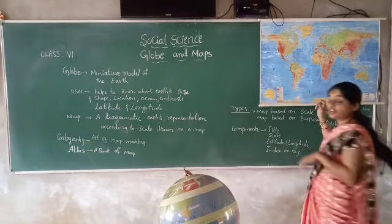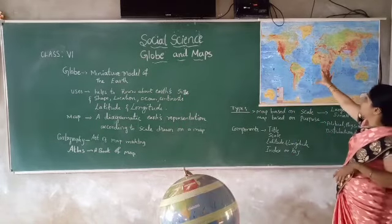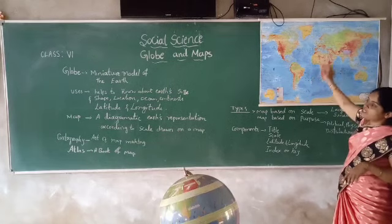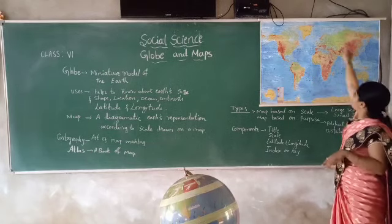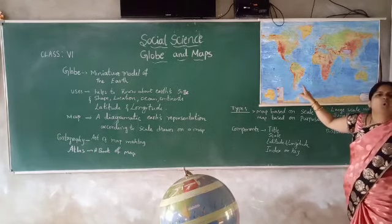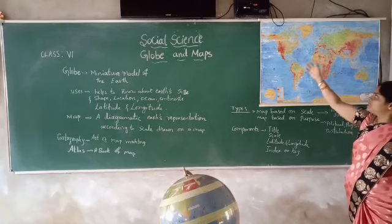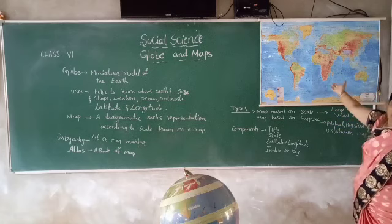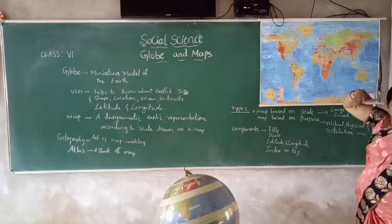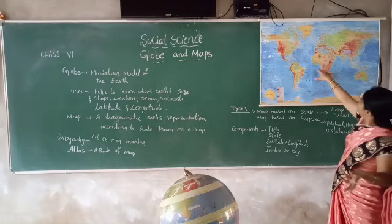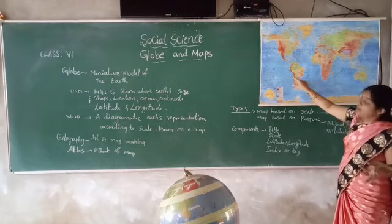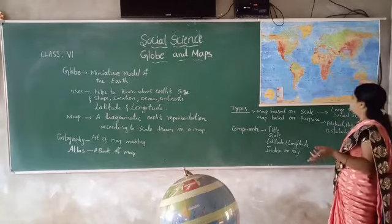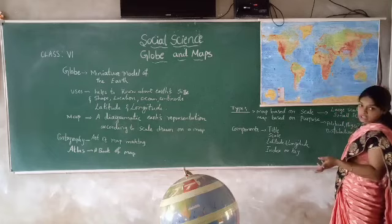That is the major difference. And another thing is we can locate everything in this map. It is based on the scale — it is a diagrammatic representation. Here also we can see the longitude as well as the latitude grid lines.